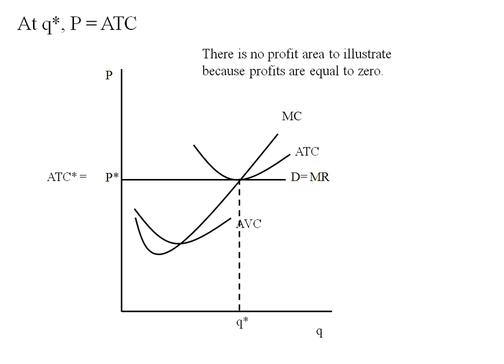In this case, there's no profit area to illustrate because profits are equal to zero. Price and ATC are the same. So P minus ATC times Q will give us zero. This firm is breaking even, or they're earning normal economic profits.